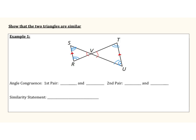We have a lot of different angles to choose from, but I'm going to go with those alternate interior angles. Angle S and angle U are congruent, and angle R and angle T are congruent. So we can move on to our similarity statement. Naming my triangle as triangle SRV, S is congruent to U, R is congruent to T, and V is congruent to V. So triangle SRV is similar to triangle UTV.